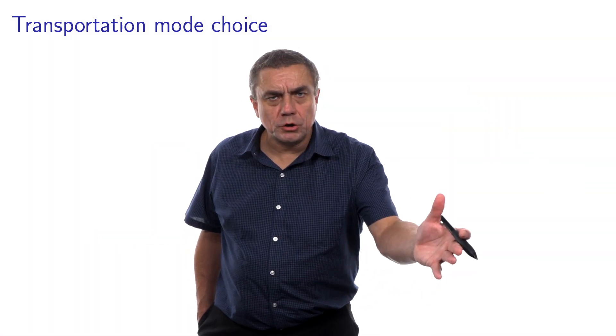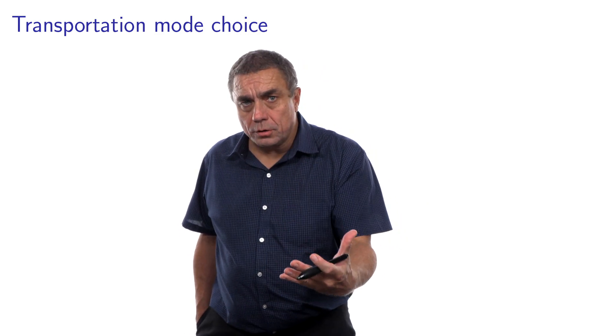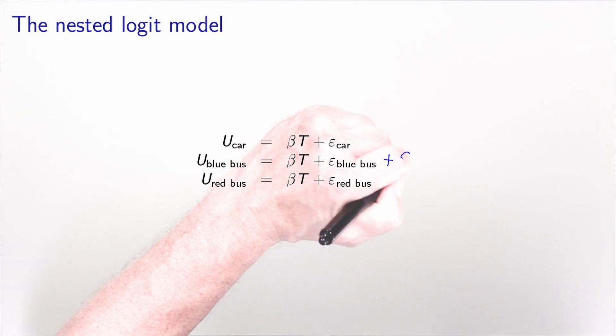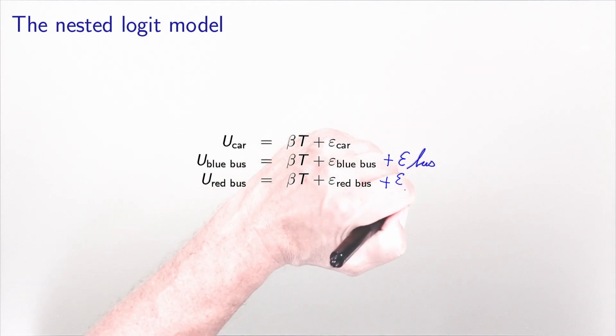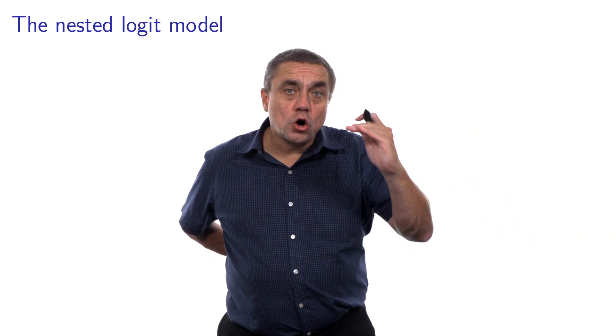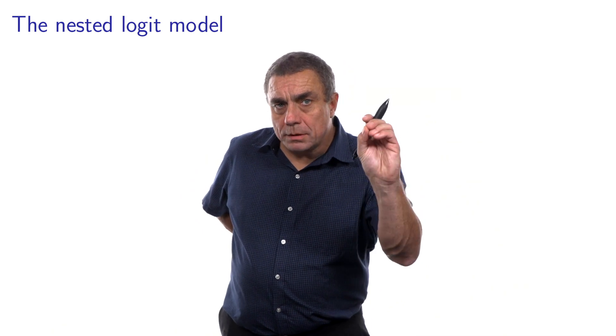I'm not implying any sequential choice here, not at all. I'm just providing some structure to the model in order to capture the fact that the two alternatives, blue bus and red bus, are actually correlated because they share unobserved attributes. The idea is to add an error component epsilon_bus to both bus alternatives, capturing all attributes that are unobserved and common to them. The other error terms, epsilon_red_bus and epsilon_blue_bus, contain unobserved attributes specific to each.